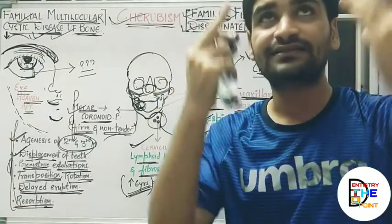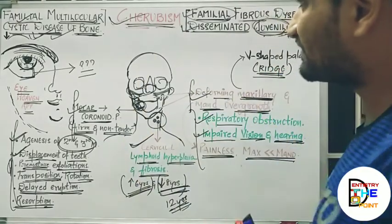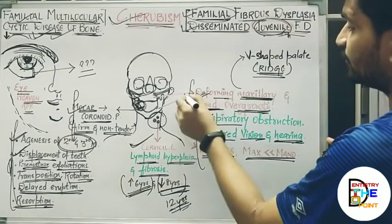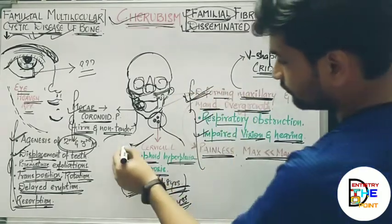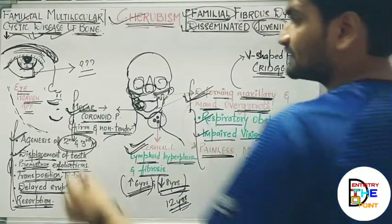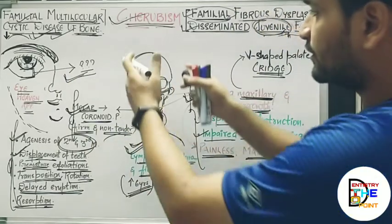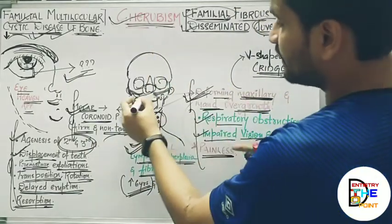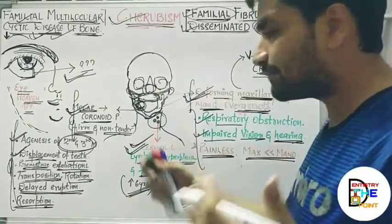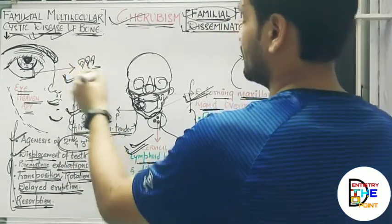This covers all the clinical features and oral manifestations of cherubism. To revise: deforming maxillary and mandibular overgrowth, cervical lymphadenopathy, mandibular involvement from molar to coronoid process, and the 'eye looking towards heaven' appearance. Remember what is happening in the maxilla and mandible — these are the four key things to keep in mind.